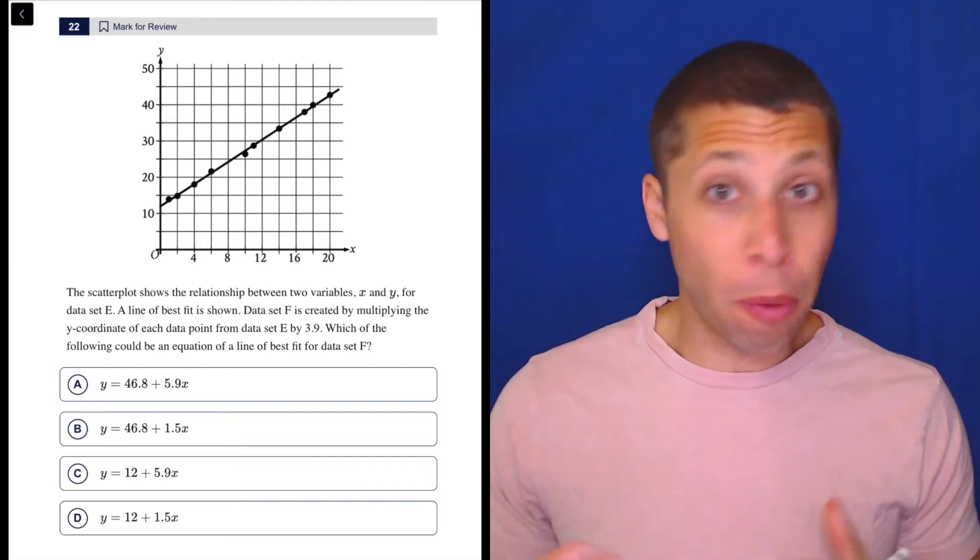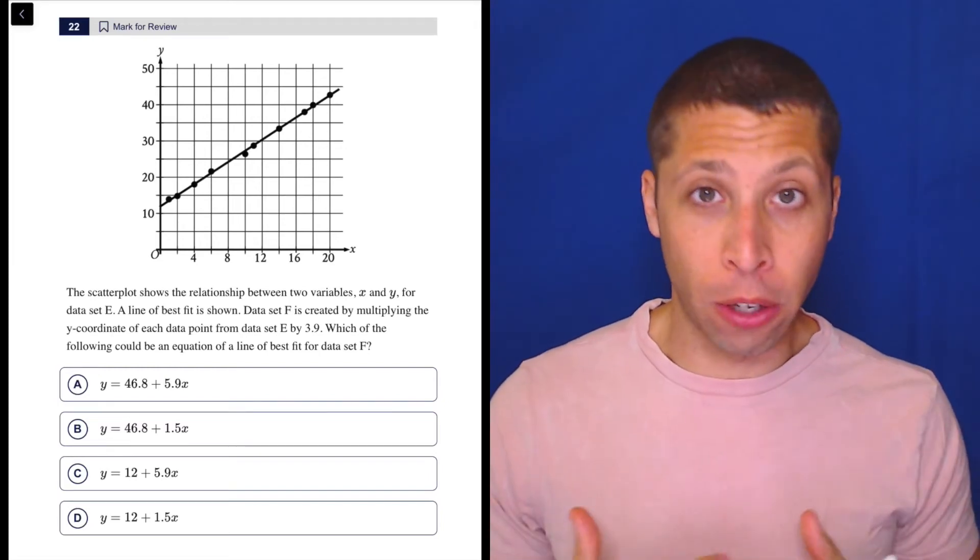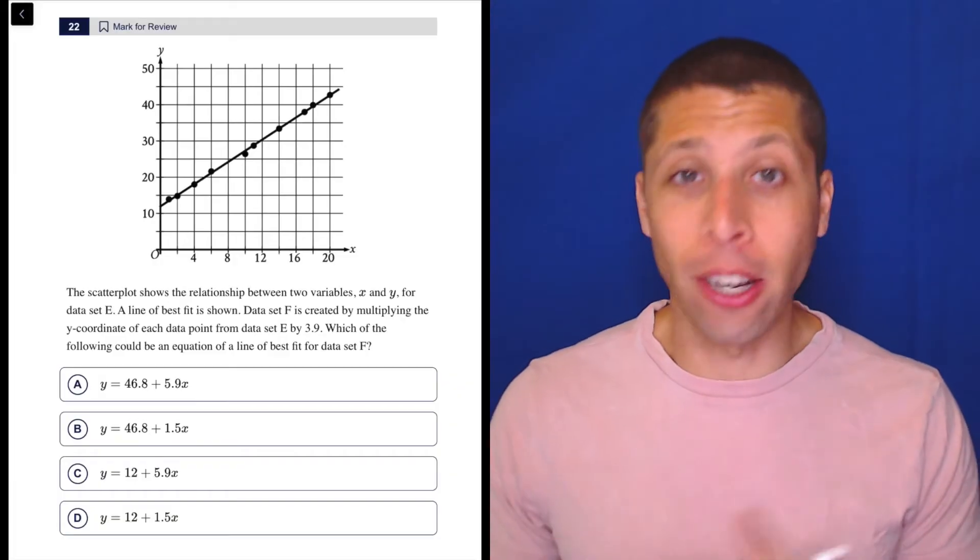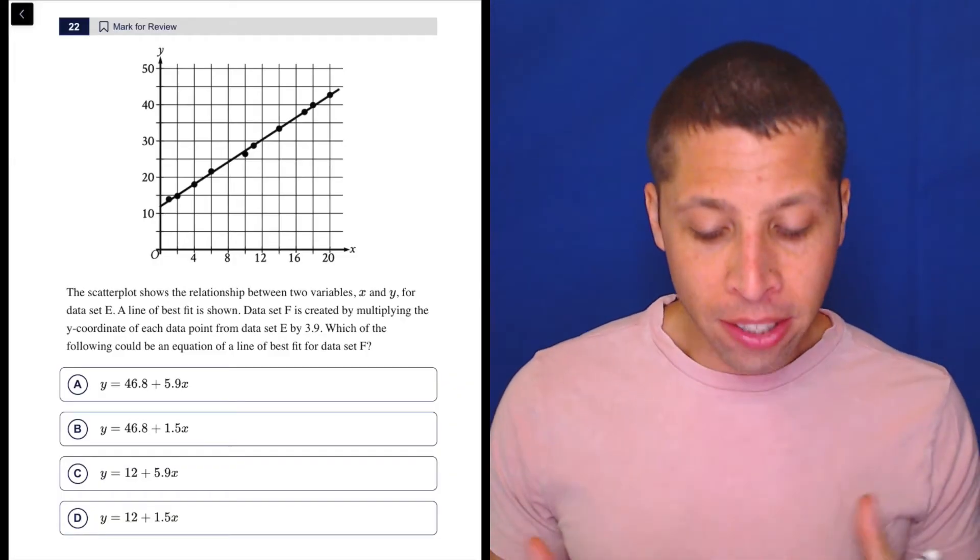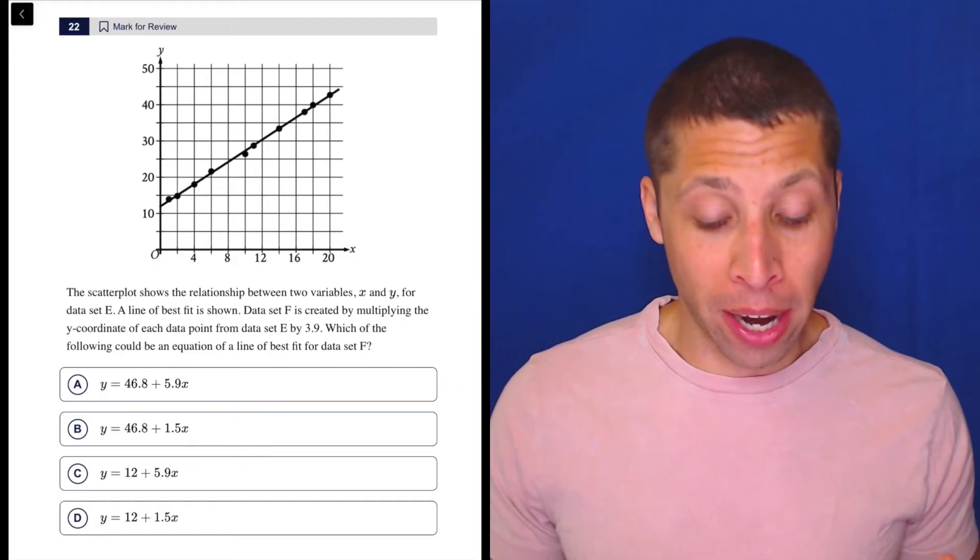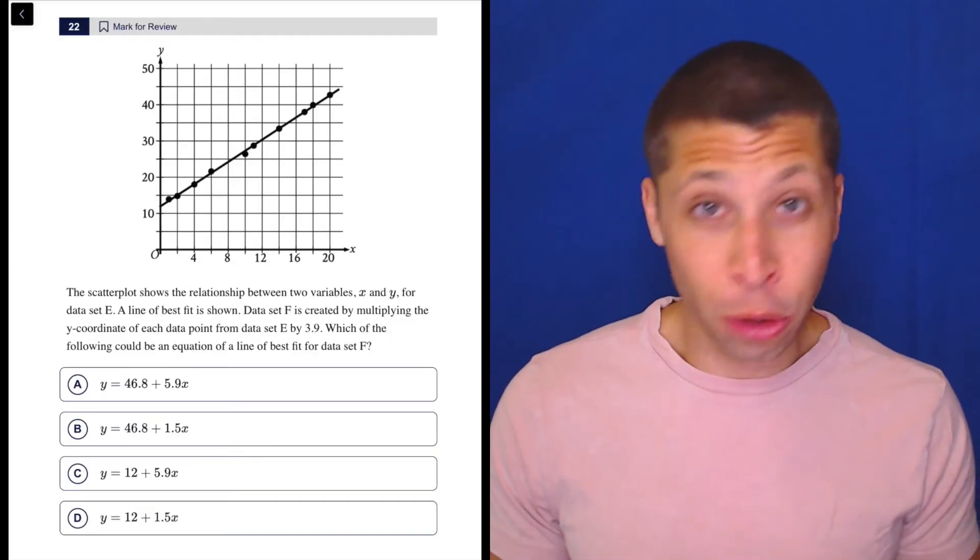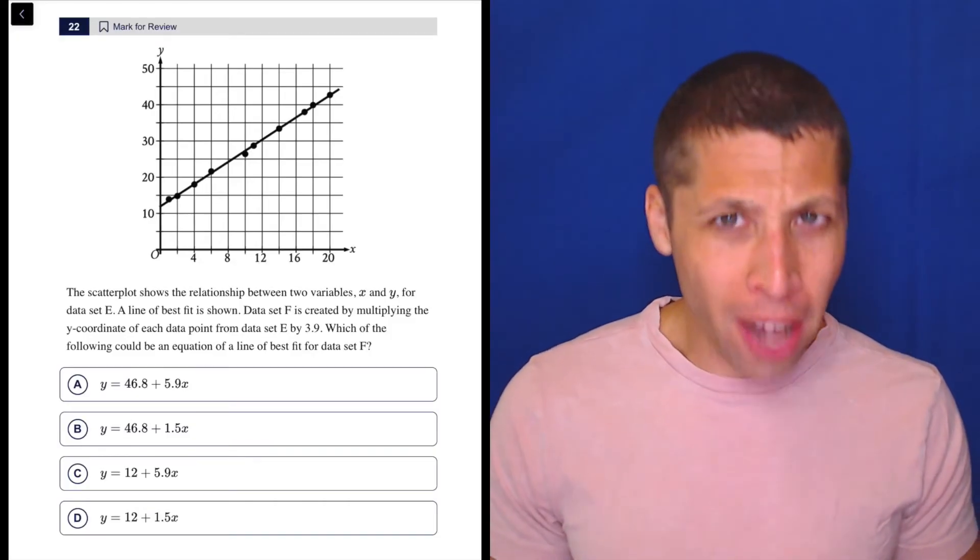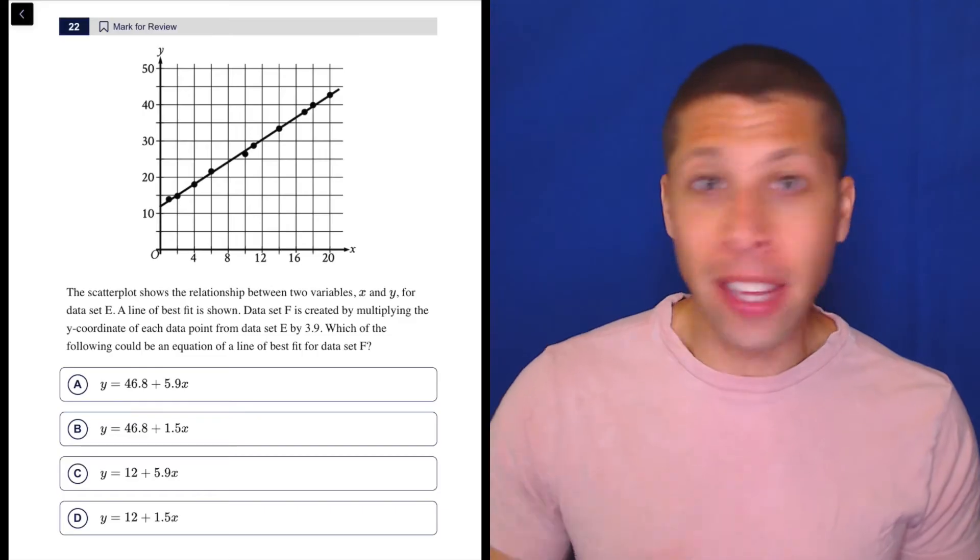Remember that the math modules, both of them, are going to go in order of difficulty. The easiest questions will be at the beginning, the hardest questions will be at the end. But it's not necessarily perfect in that way. I actually think that question 22 here is much easier than either of the questions that came before it, 21 or number 20.